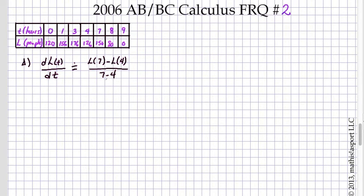Y2 minus Y1 over X2 minus X1. And from that, we simply get 150 minus 126 over 3, and that gives us 8 people per hour.